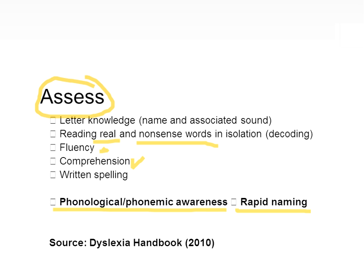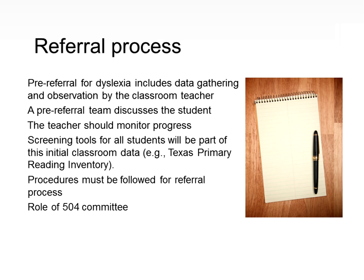Regarding the referral process: there is a pre-referral phase including data gathering and observation by the classroom teacher. A pre-referral team discusses the student. You must keep track of data systematically in the classroom. Dr. Smith asks to what extent direct instruction can mitigate dyslexia — that's actually a key component of the Dyslexia Handbook: systematic, direct, and explicit instruction. The teacher should monitor progress, usually weekly. Keep collecting literacy, spelling, reading, and writing data in a folder. The state provides screening tools like TPRI; there are flow chart procedures and identified roles for committee members.